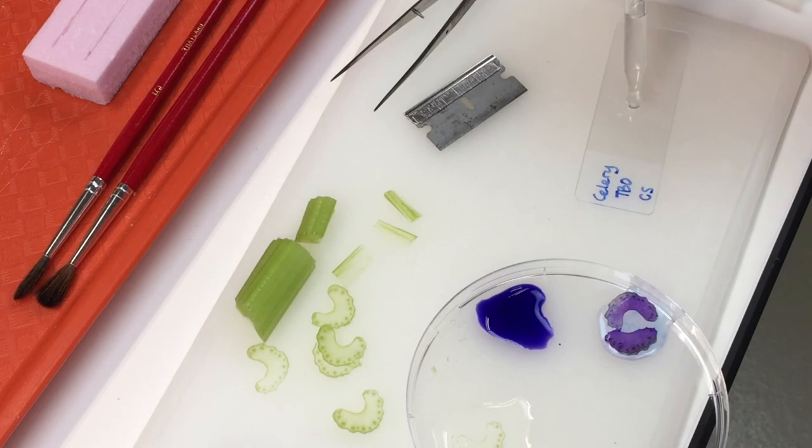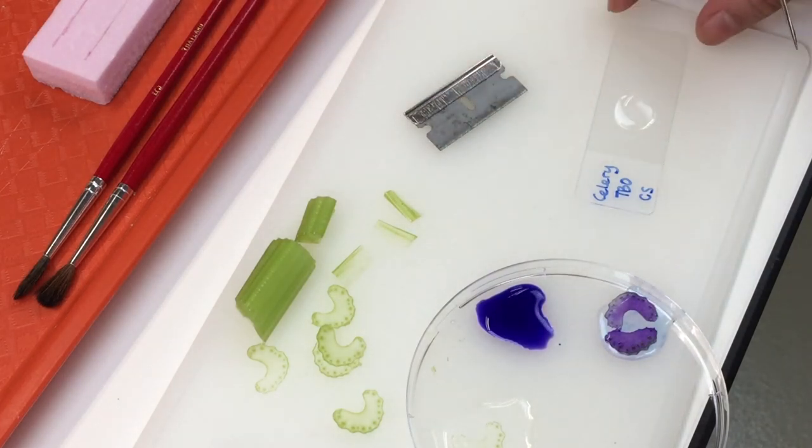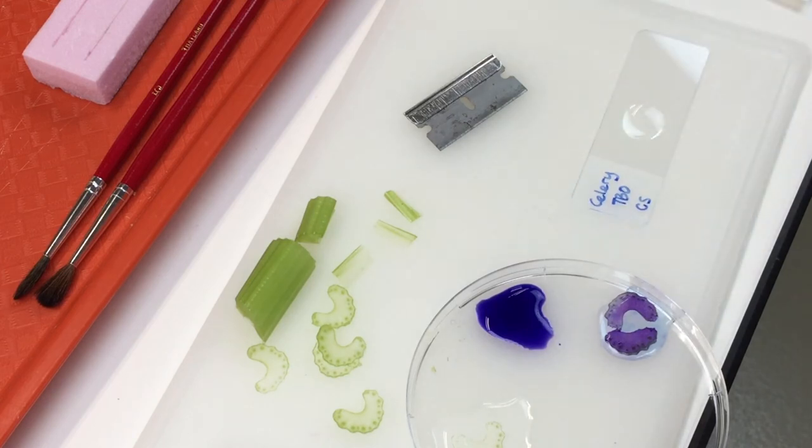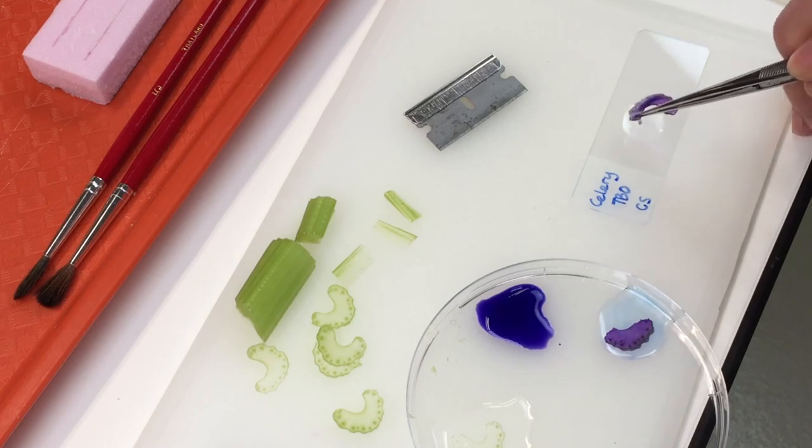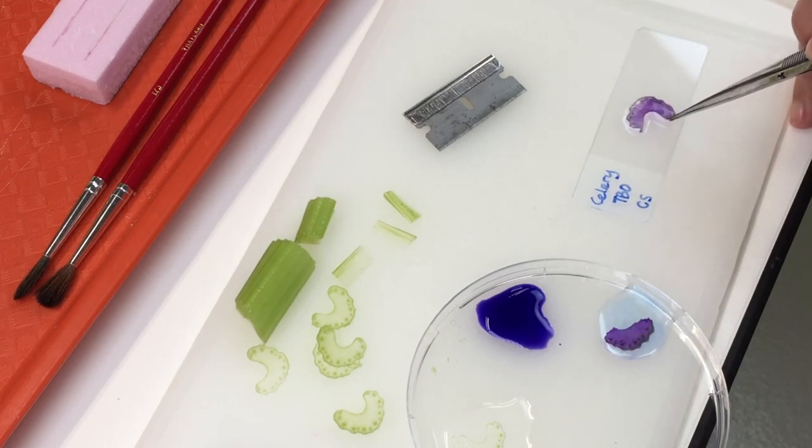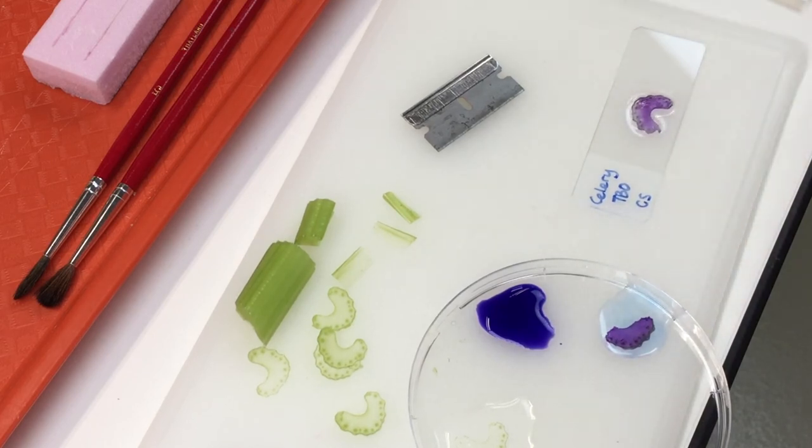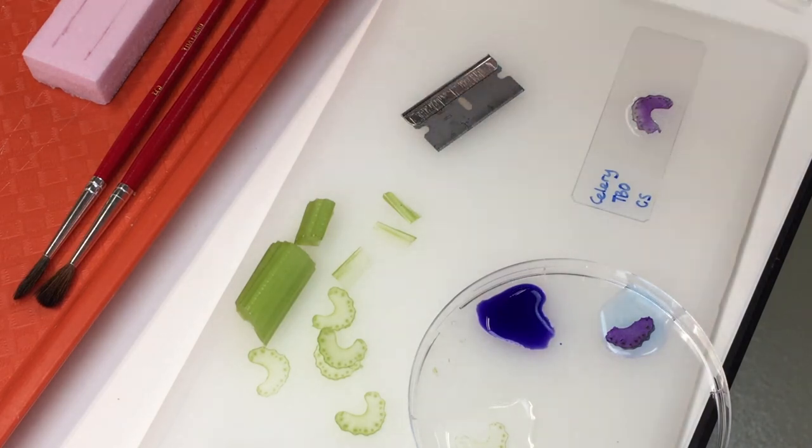Add a drop of water onto your microscope slide. Using a pair of forceps, place your specimen onto the slide. Make sure that your slide is sufficiently submerged in water.